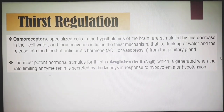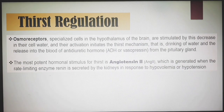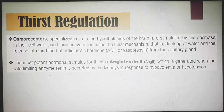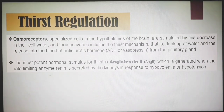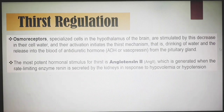Osmoreceptors, specialized cells in the hypothalamus, are stimulated by a decrease in cell water, initiating the thirst mechanism — drinking of water — and the release of antidiuretic hormone from the pituitary gland. The most potent hormonal stimulus for thirst is angiotensin 2, which is generated when renin is secreted by the kidneys in response to hypovolemia or hypotension.